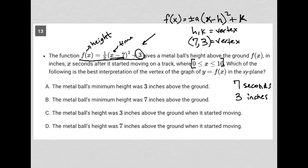Choice A: the metal ball's minimum height was three inches above the ground. That's a good one actually. Because this is a parabola, it's going to look like this where the vertex of the parabola is here, which represents the minimum of this parabola. So yeah, we know that this is the point seven comma three, and we've interpreted what that means in terms of time and height. But yeah, this is a minimum - it'll never be lower than that. So I like choice A.